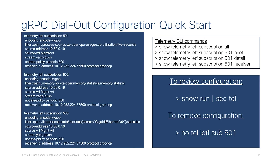As far as QuickStart goes for gRPC, it's not too complicated. We can copy and paste two or three subscriptions — 501, 502, and 503 — and that's going to start pushing telemetry from our device at this IP address. It's going to push it out to the collector listening on port 57500. We're transmitting this gRPC data over a TCP connection.